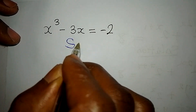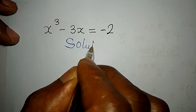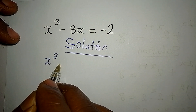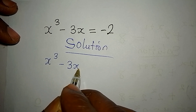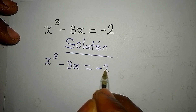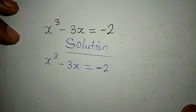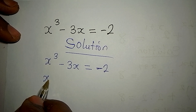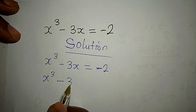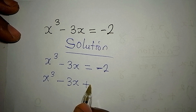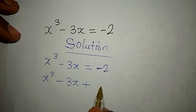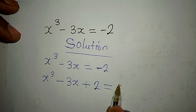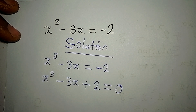Let's provide the solution to this problem. We have x to the power of 3 minus 3x equals negative 2. The first thing I will do is bring 2 to the left, so we have x to the power of 3 minus 3x plus 2, because it's minus on the right, this becomes plus 2 when moved to the left.